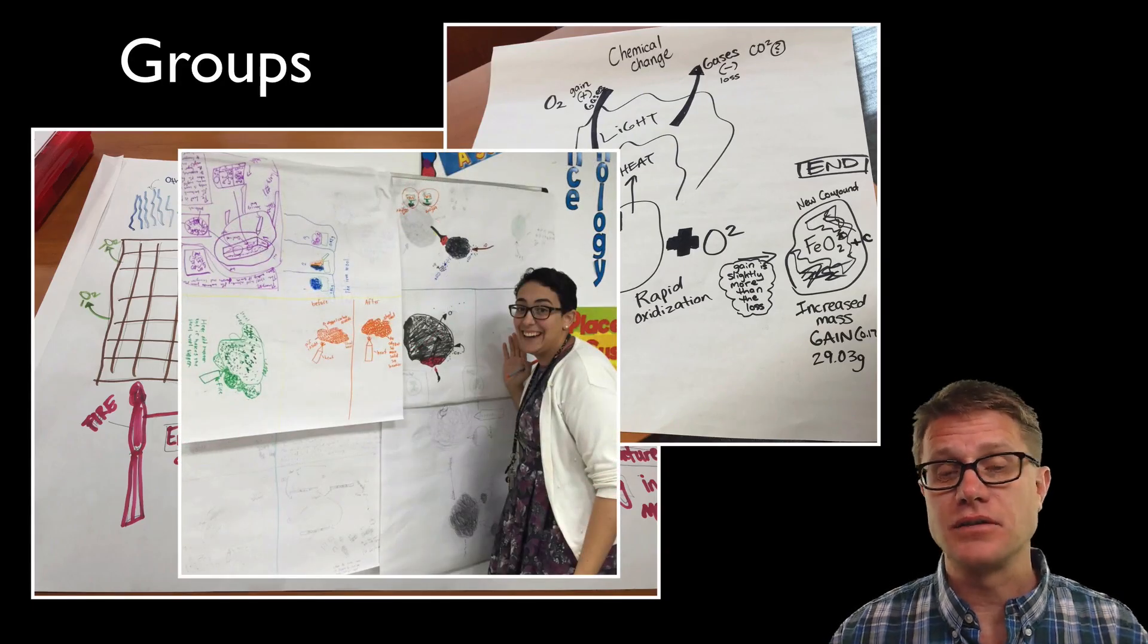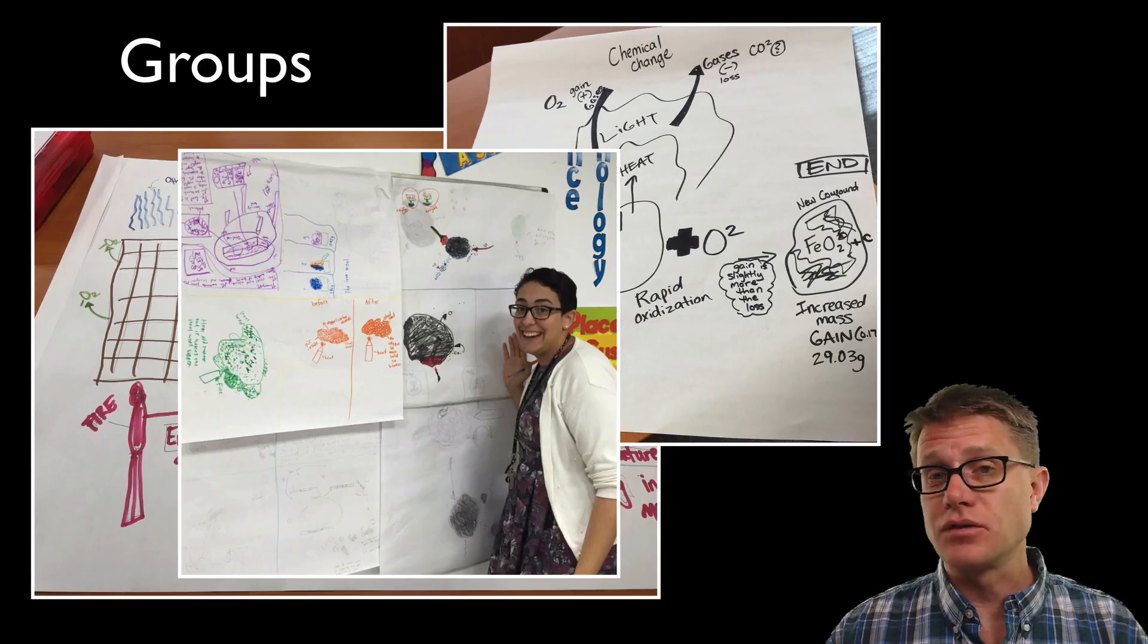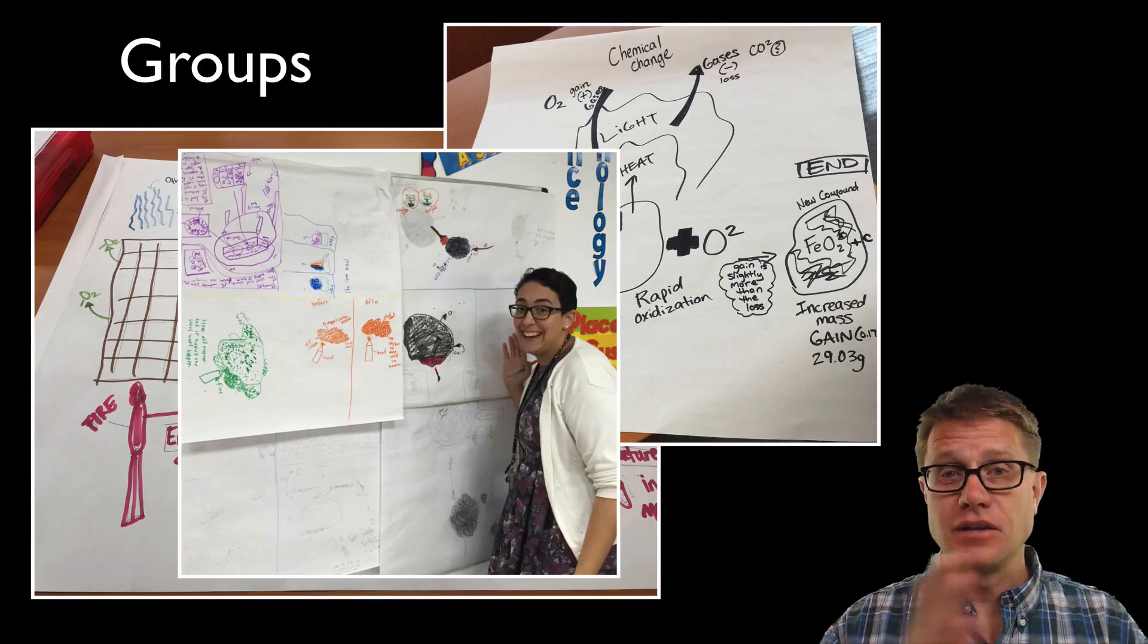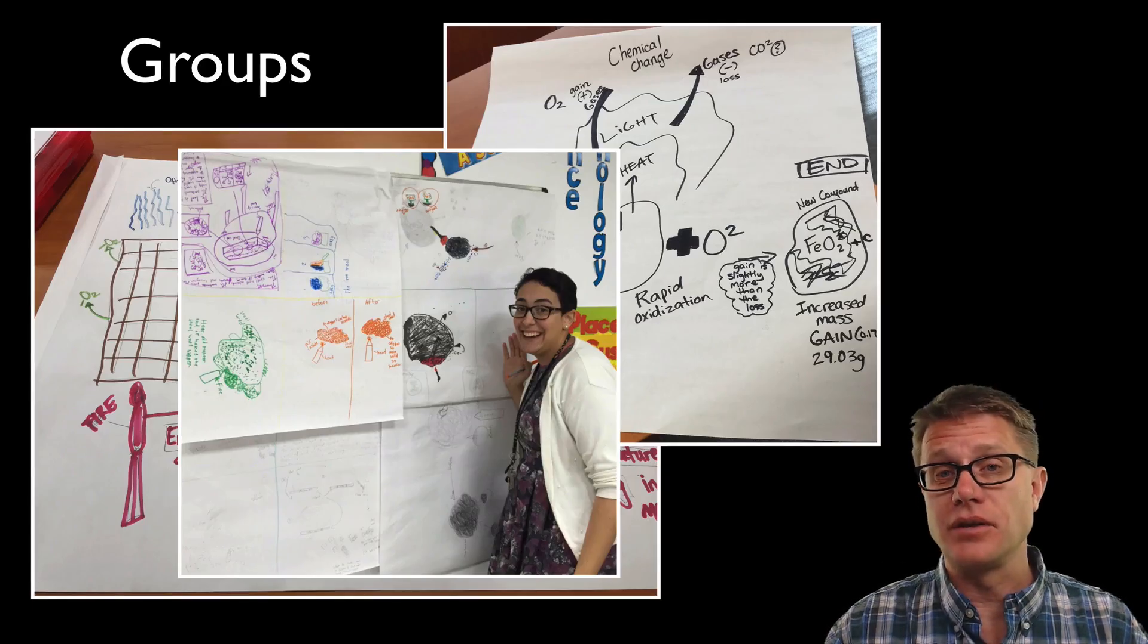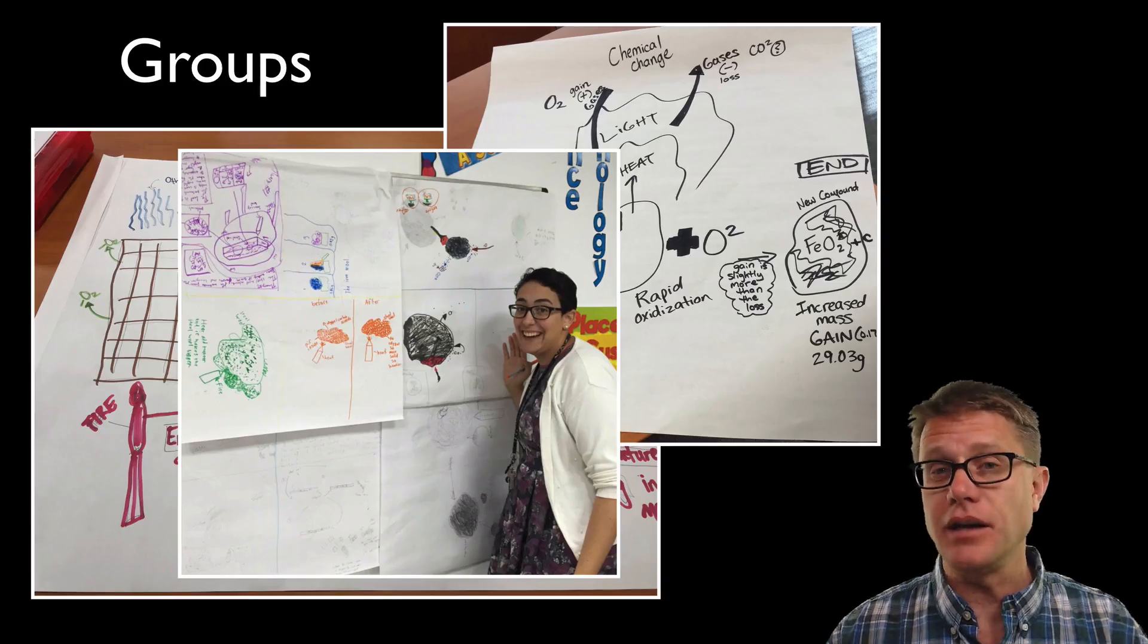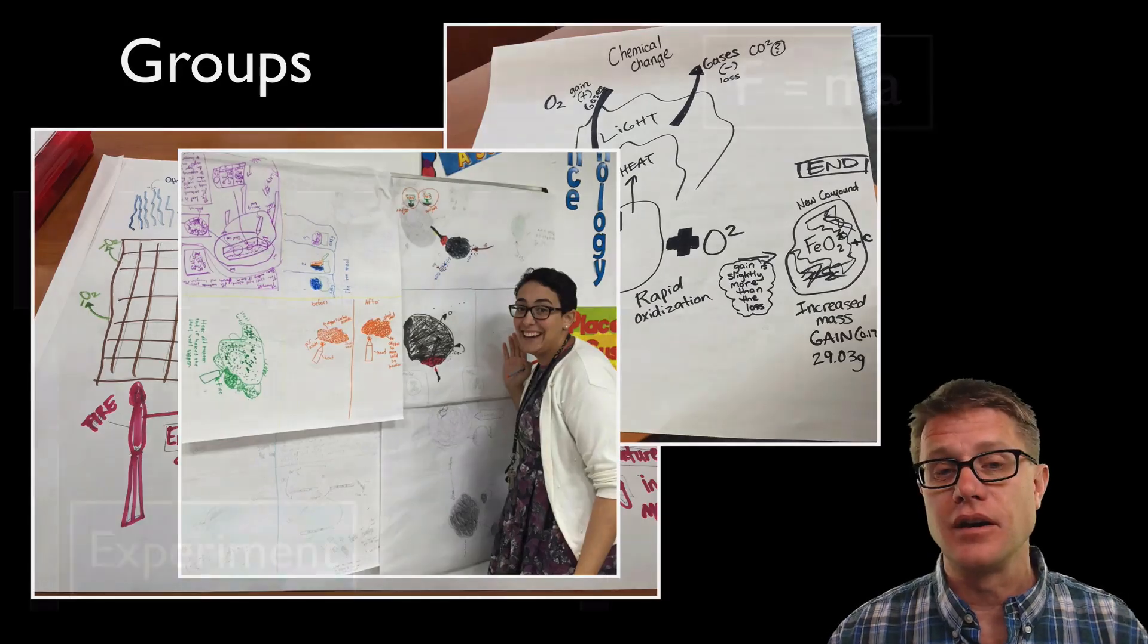And as we come together as a classroom group the models get even more powerful after that. This is a fourth grade class and the students are making really wonderful models. One of the things we are learning about science education is way down at the lower elementary kids can make elaborate models. We just have to not explain to them. We have to listen to what they are saying.